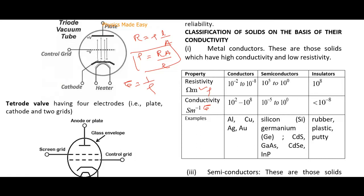Examples of conductors: aluminium, copper, silver, and gold. Semiconductors include silicon, germanium, and compound semiconductors like cadmium sulfide, gallium arsenide, cadmium selenide, and indium phosphide — even organic polymers can act as semiconductors. Insulators include rubber, plastic, and putty.